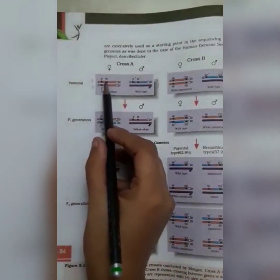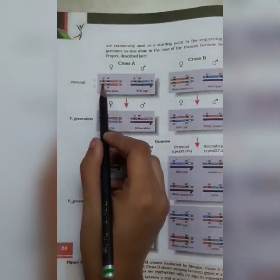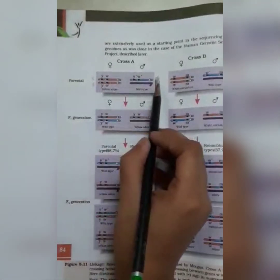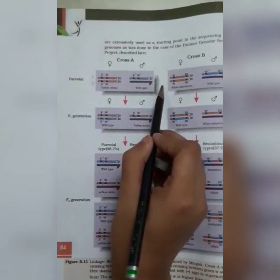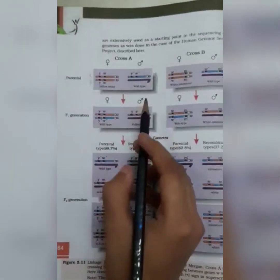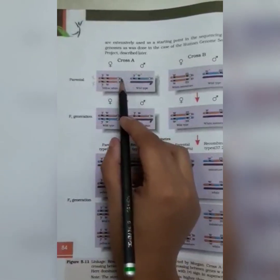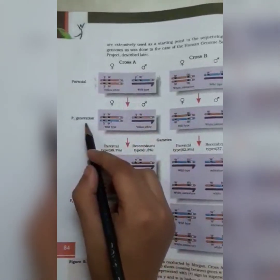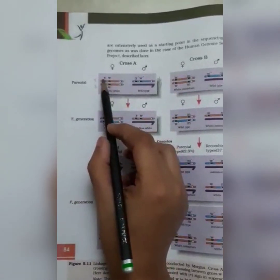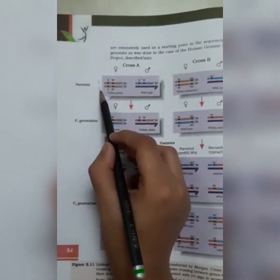This is the X chromosome and X chromosome of female. This is the X chromosome and Y chromosome of male. When they are crossed, we will get the F1 generation. Here both the X chromosomes are similar.